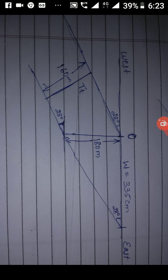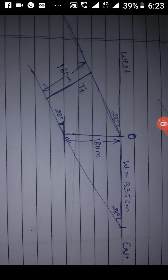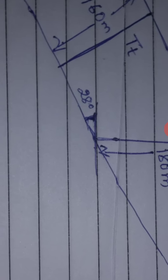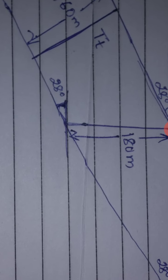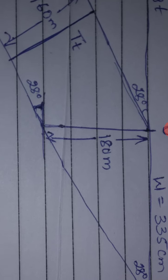Using the graphical method — west is on the left side and east is on the right side. The sandstone bed is dipping towards the west. The origin point is O. From the observation point, the borehole is sunk, and at 180 meters depth, the lower bedding plane is reached from the horizontal surface.